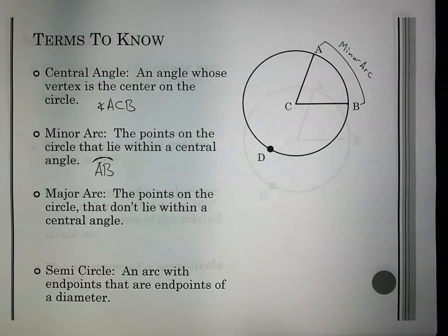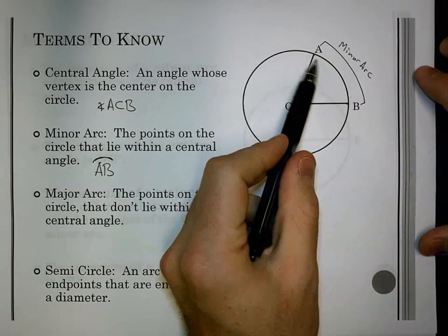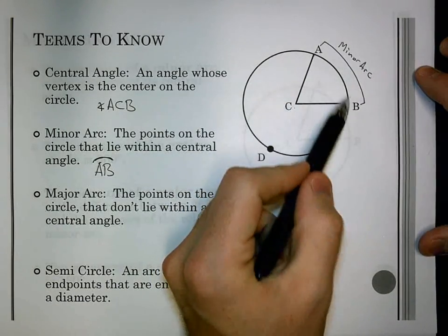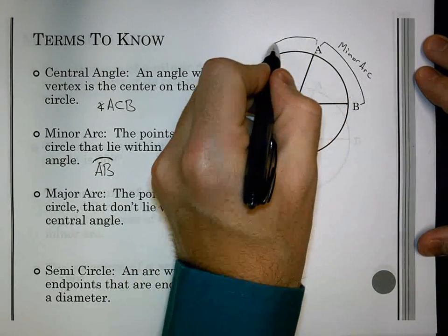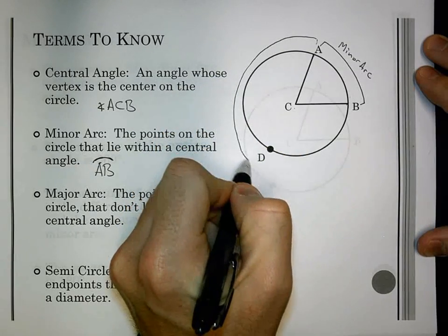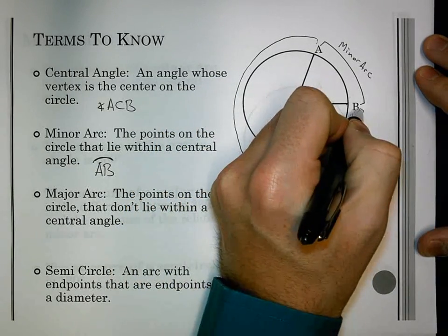Don't put a straight line there because that would be a segment, or a chord in this case. But it's going to be an arc, so we put the curved arc above it. A major arc is going to be the points on the circle that don't lie within the central angle. So, really, I have this entire circle. The central angle takes up the minor arc, A to B. The rest of it is our major arc. It starts at A, goes through D, ends at B.